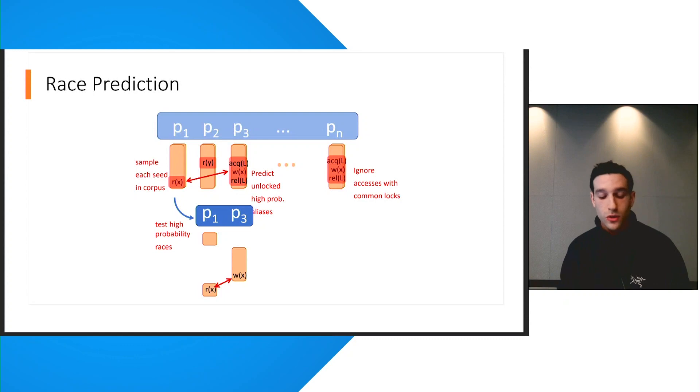For race prediction, we first sample each seed in the corpus. We then identify the stable memory accesses along with their locks. We ignore memory accesses that are guarded by common locks and we predict races on unguarded stable accesses that are performed to the same address. We then test each predicted race by controlling the thread execution schedule to force the two memory accesses that are predicted to race to execute concurrently. We then check whether the predicted racing memory accesses are both executed and access the same address in the resulting execution trace. So, this allows us to confirm each race we report and also obtain stack traces that can be used for debugging the races.